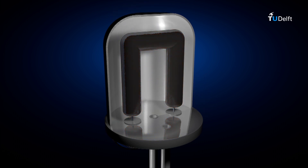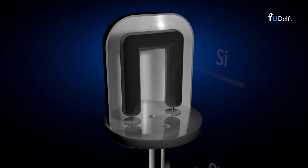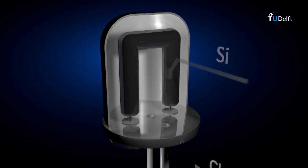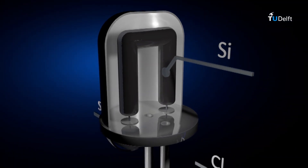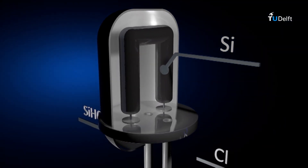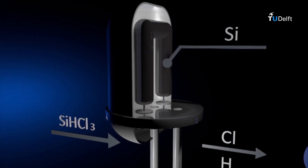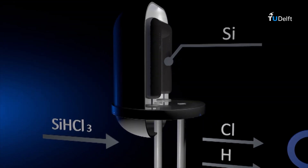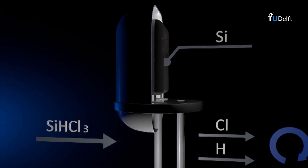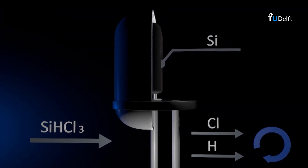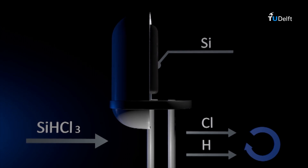As the exhaust gas still contains chlorosilane and hydrogen, these gases are recycled and used again. Chlorosilane is liquefied and distilled and reused. The hydrogen goes through a clean-up process and is recycled back into the reactor.